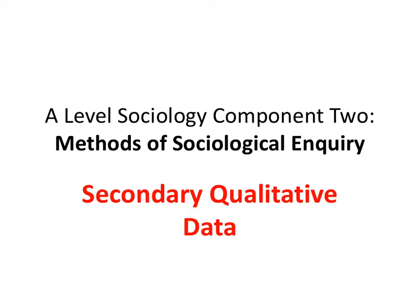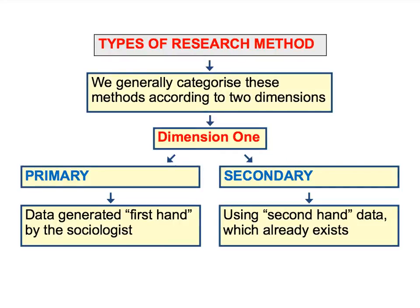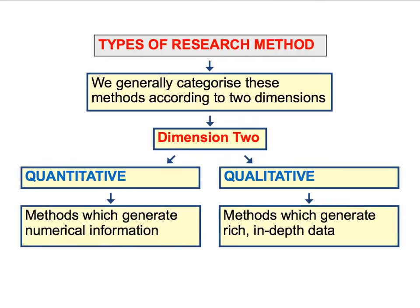In this Component 2 research methods screencast, we're going to look at the use of secondary qualitative data in sociological research. This is the second screencast analysing the use of secondary data in sociology. In the first screencast on secondary data, we used the example of official statistics to discuss the usefulness of quantitative secondary data. In this particular screencast, we're going to look at the use of qualitative secondary data.